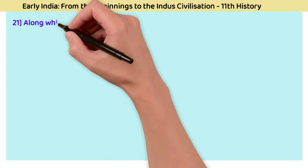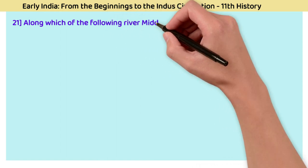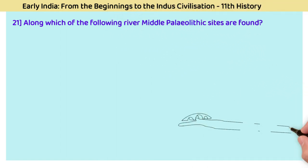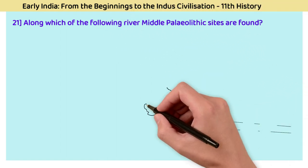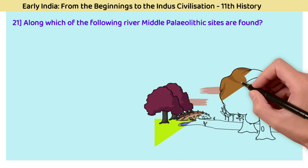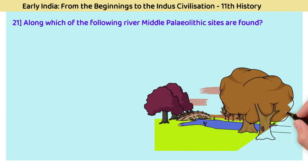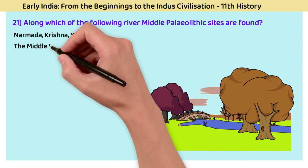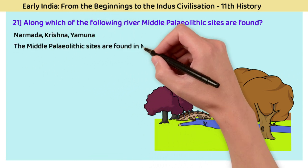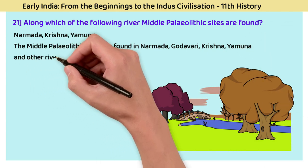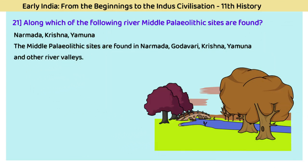Question 21: Along which rivers are Middle Paleolithic sites found? The answer is Narmada, Krishna, and Yamuna. Middle Paleolithic sites are found in river valleys, mostly in the Narmada, Godavari, Krishna, Yamuna, and other river valleys.